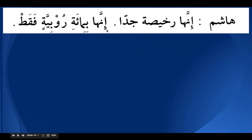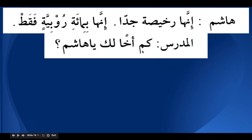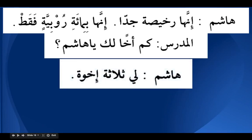The teacher asks: Kam akhan laka ya Hashim — how many brothers do you have? What comes after kam is tamiz — singular, indefinite, mansoob. Hashim says: Li thalasatu ikhwatin — I have three brothers. Li is jar majroor shibhu jumla khabar muqaddam; thalasatu is mubtada mu'akhkhar and it is mudaf, ikhwatin is mudaf ilayhi. Numbers three to ten come as a mudaf-mudaf ilayhi combination.